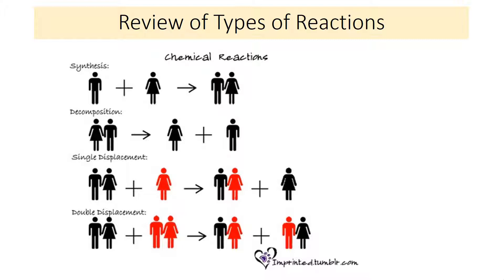Synthesis or combination: you have two reactants that form one product. Decomposition: one reactant forms two or more products. Single displacement: you have a compound and an element, and the element switches so it becomes part of the compound, and part of the compound is now by itself as an element. Double displacement: you switch partners completely. These are the four categories. We also talked about neutralization, which is a double displacement, combustion, which doesn't quite fit into these categories, and redox, which includes several of them.